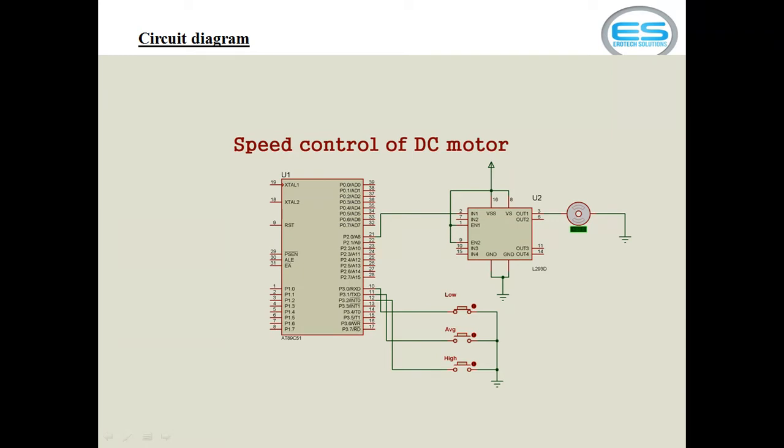It is a four channel driver. One input I am connecting with P0.0. If you are giving direct high, it runs with maximum speed. Now, as per previous discussion, whenever you are giving high, low, high, low output, then the speed will vary from your motor. Three individual buttons I am using here.